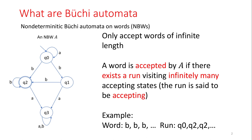For instance, the word B^ω is accepted because there is a corresponding run over Q0, Q2^ω being accepted.